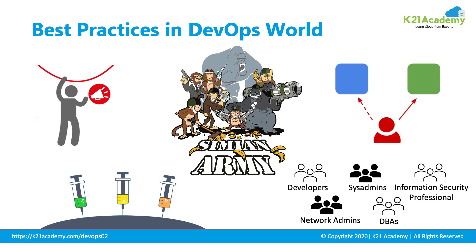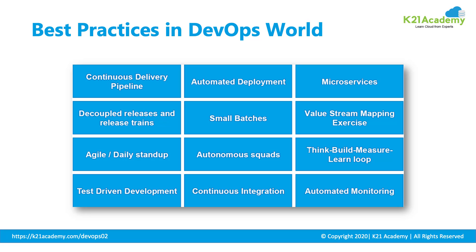These are all pictorial representations of the best practices. The first diagram is the Andon Cord — if you find something wrong, you pull the cord and stop it. The next is Chaos Monkey, showing the Simian Army going inside a data center and destroying it. Then there is the blue-green deployment diagram with a switch going between blue and green. Next is dependency injection, followed by embedded teams — showing developers, system admins, security, networks, and DBAs all combined together.